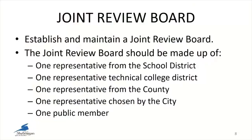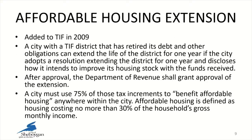The Joint Review Board consists of a representative from the Sheboygan Area School District, one from the Technical College, one from Sheboygan County, a representative from the city, and a public member. There is also the opportunity for an affordable housing extension, which was added to TIF in 2009. It allows a city that has a district that has retired its debt or other obligations to extend the life of the district for one year, with 75% of the tax increments needing to benefit affordable housing anywhere within the city. Affordable housing is defined by the law as housing costing no more than 30% of the household's gross monthly income.